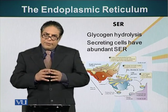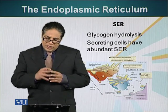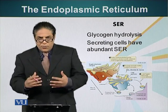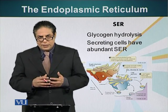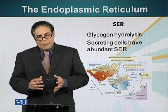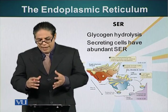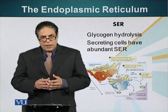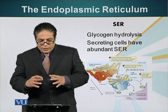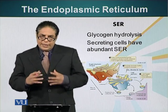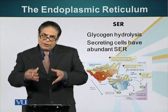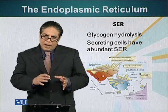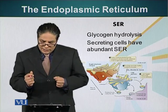Smooth endoplasmic reticulum is also very important in neutralizing harmful chemicals. For example, our liver cells have abundant smooth endoplasmic reticulum. Smooth endoplasmic reticulum contains enzymes that can modify toxic molecules, thereby neutralizing them.